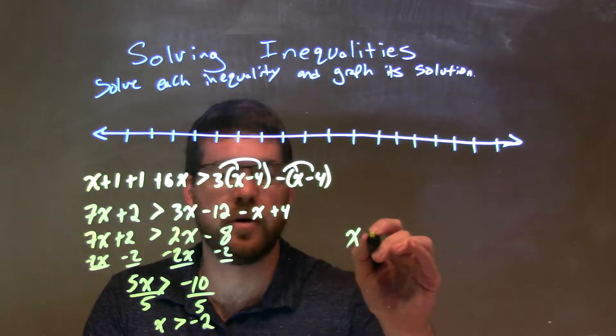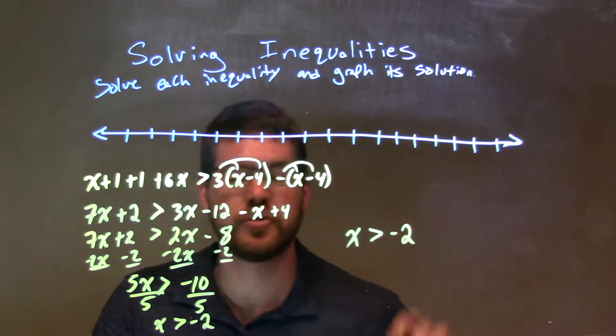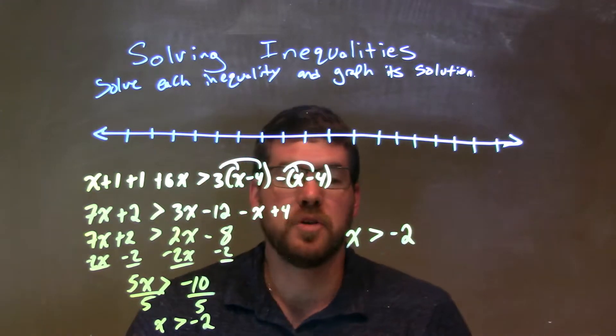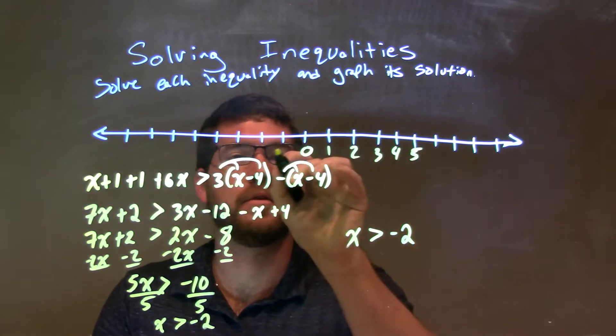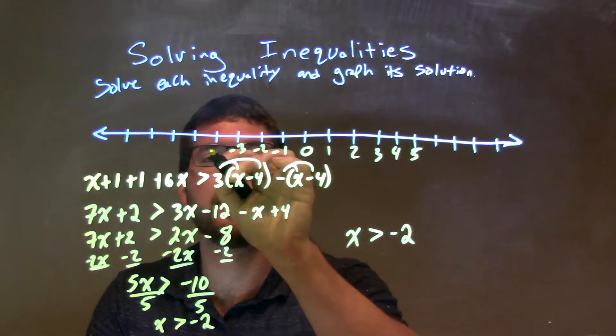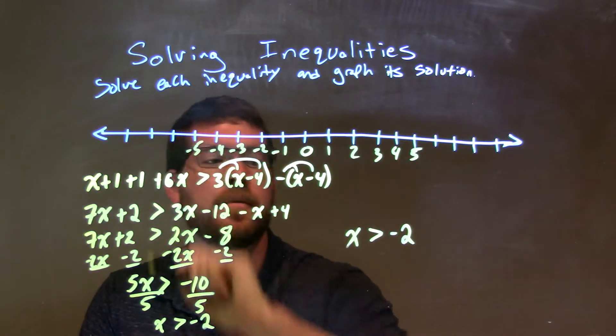So, let's go rewrite that up here. x is greater than negative 2. I need to graph it now. So, we have 0, 1, 2, 3, 4, 5, negative 1, negative 2, negative 3, negative 4, negative 5.